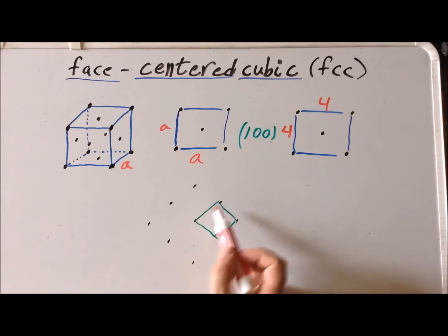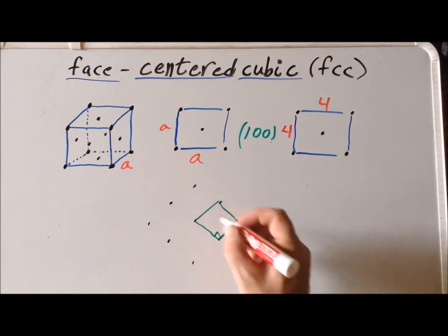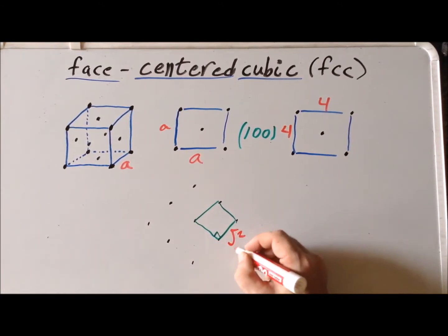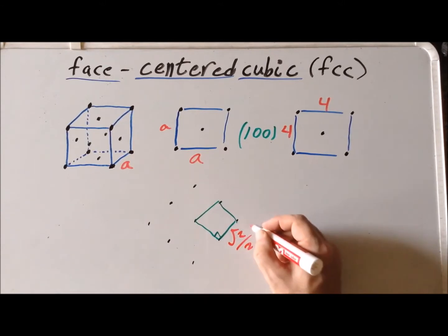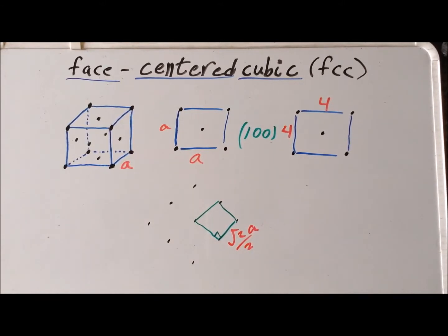And we would notice that the dimensions of this particular unit cell now are not going to be a anymore because a was the distance from here to here. So you would see that this is the distance the square root of two over two times a. So now we've defined a new unit cell, but this also has fourfold rotational symmetry.